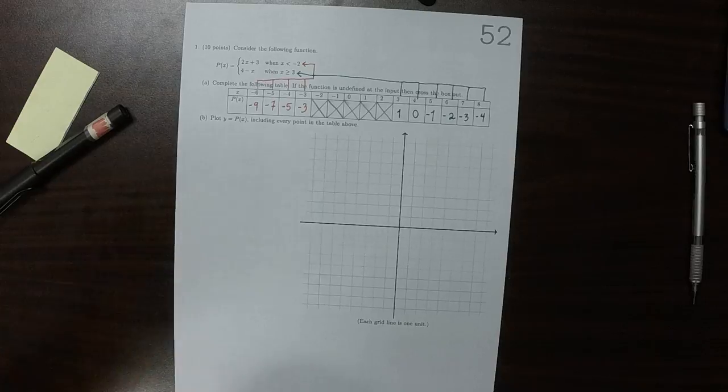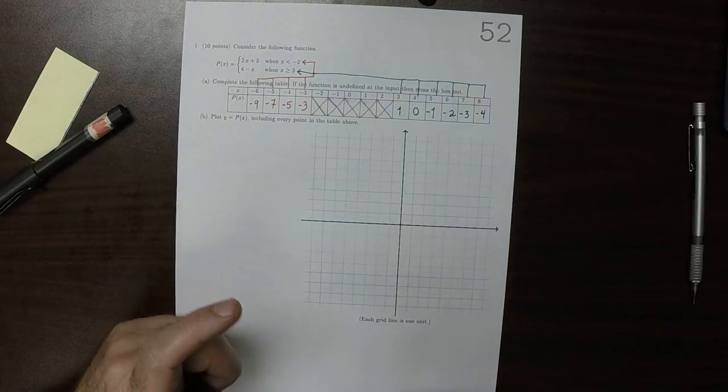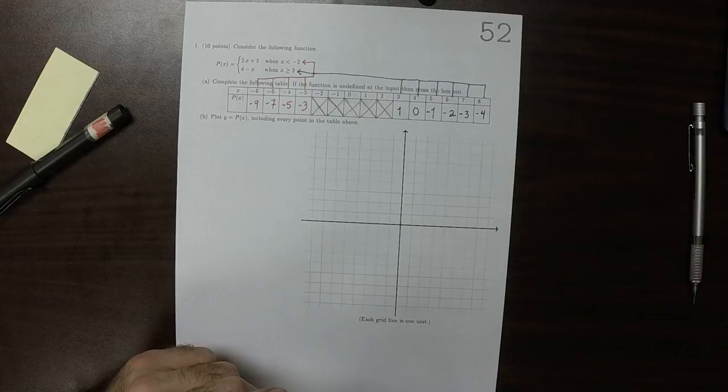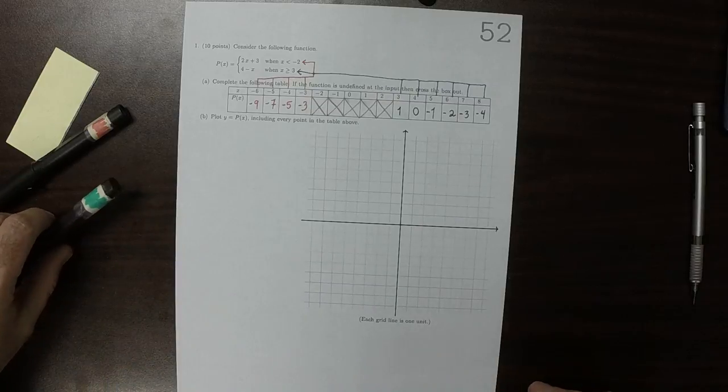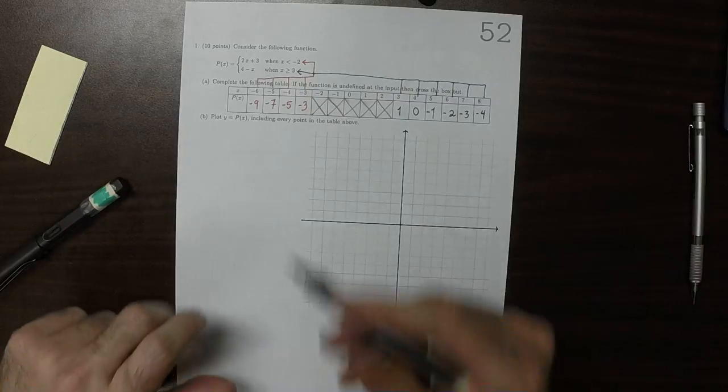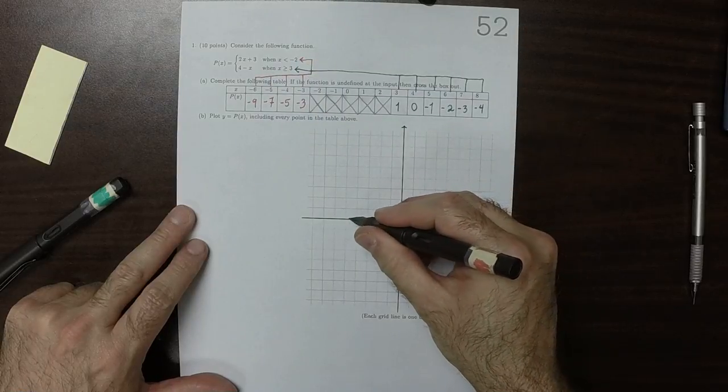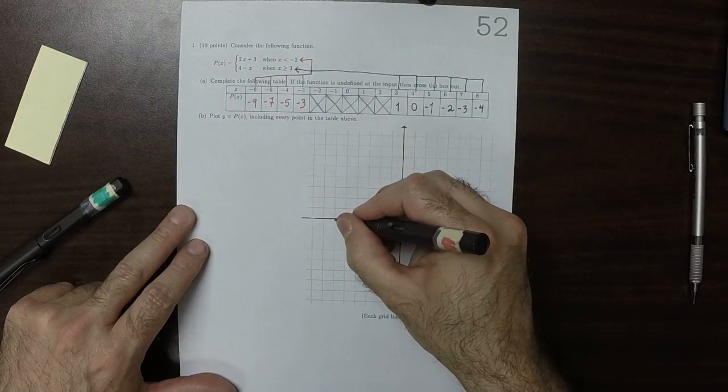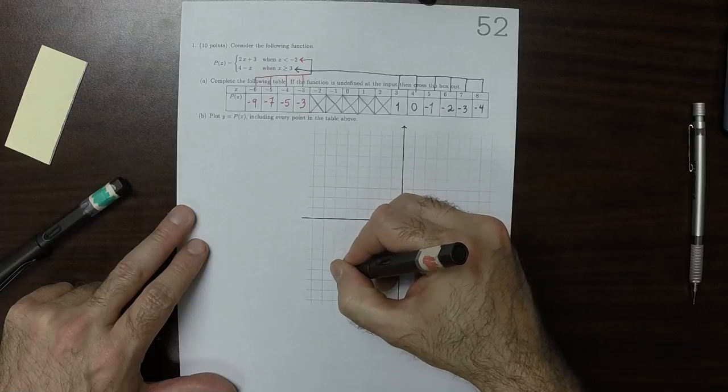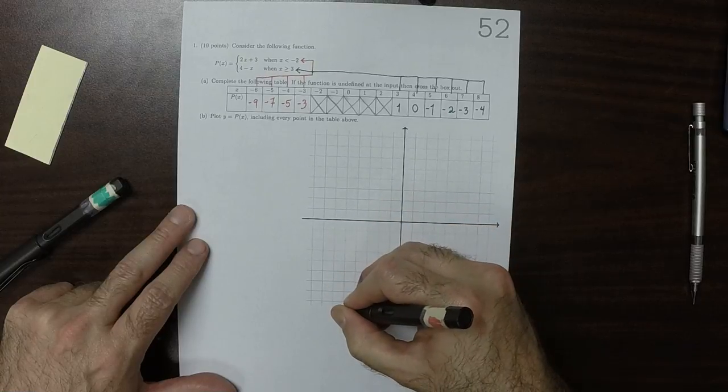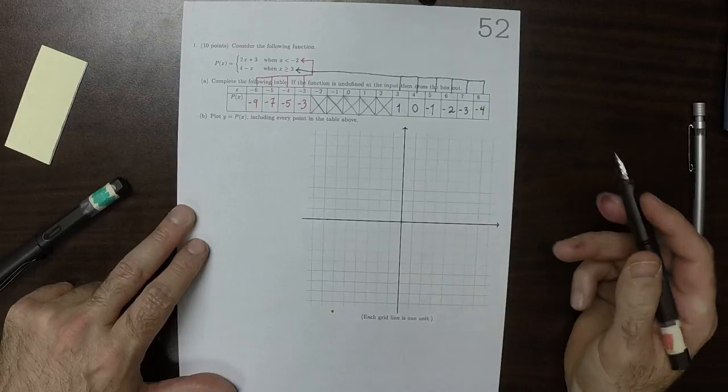So now let's plot all of these. The red points, negative 6, negative 9, so 1, 2, 3, 4, 5, 6, and then 2, 4, 6, 8, 9.